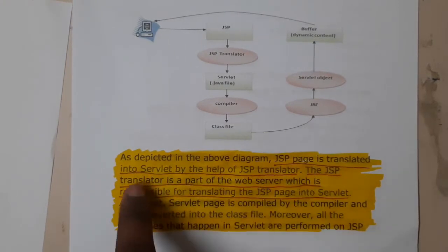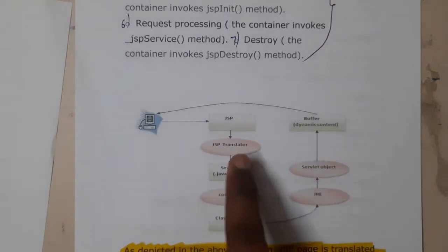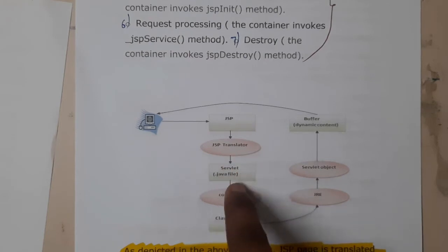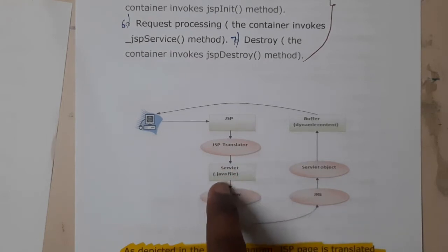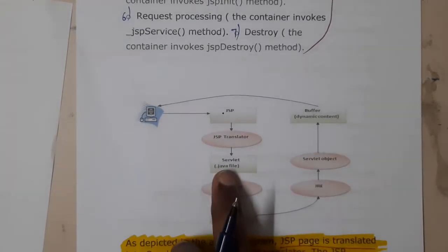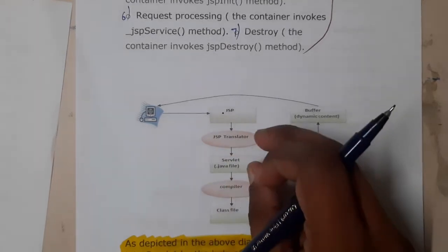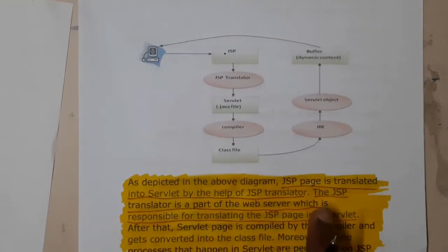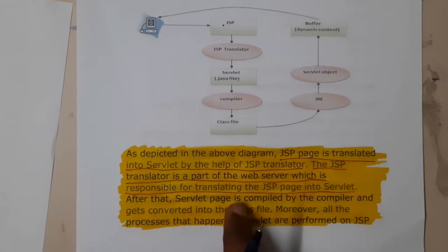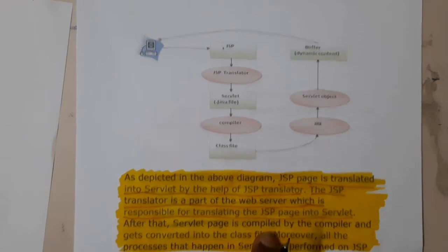JSP is translated into a servlet by the JSP translator. The JSP code goes through the JSP translator and is converted into a servlet file — that is a .java file. So basically from a .jsp file it is converting into a .java file using the JSP translator. The JSP translator is a part of the web server which is responsible for translating the JSP page into a servlet. After that, the servlet page is compiled.